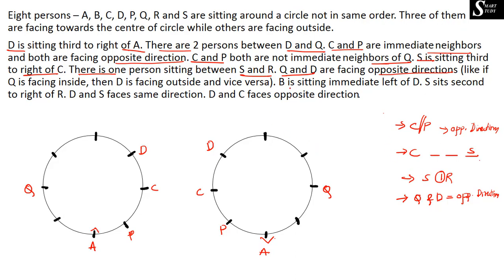B is sitting immediate left of D. So B's position is immediately to the left of D. B cannot be substituted on the wrong side — only the possible chance is B has to be substituted as the immediate left of D. If D is facing outward, D's immediate left would be a specific direction, and B has to be placed there accordingly.